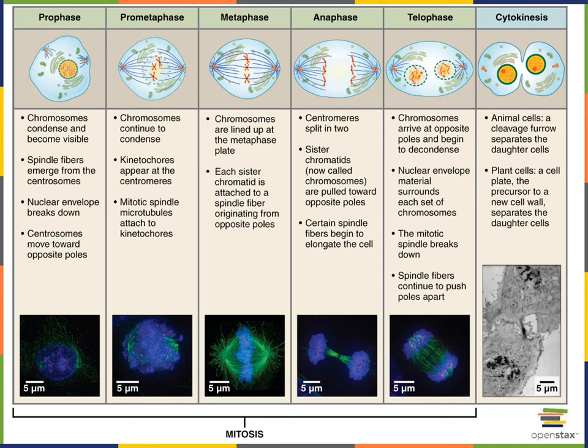Prometaphase is a transition to the next step, which includes the microtubules attaching to the centromeres of chromosomes to complete the formation of the mitotic spindle.